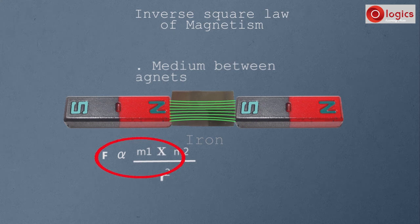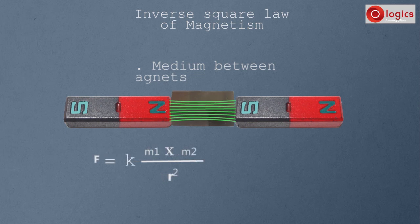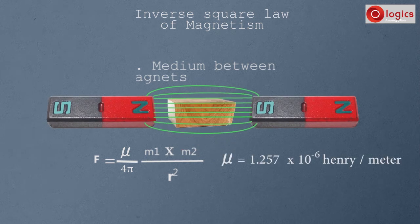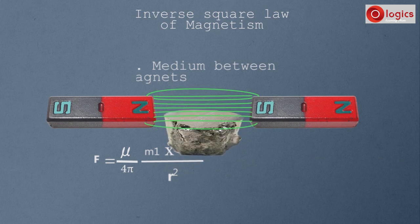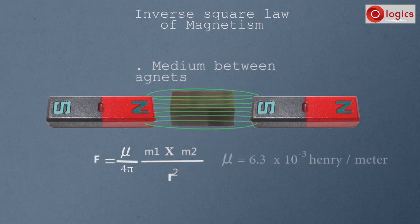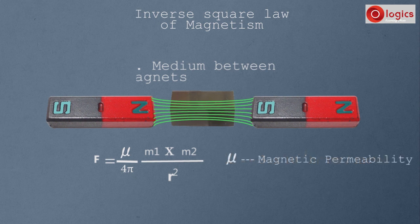In this equation, force is directly proportional to product of pole strengths and inversely proportional to square of distance. Since force is influenced by the medium, we introduce a medium constant K, defined as nu divided by 4 pi. Here nu is the magnetic permeability of the medium, and its value depends on the medium. If wood is the medium, nu equals 1.257 into 10 to the power minus 6 Henry per meter. If nickel is the medium, nu equals 7.54 into 10 to the power minus 4 Henry per meter. If iron is the medium, nu equals 6.3 into 10 to the power minus 3 Henry per meter.